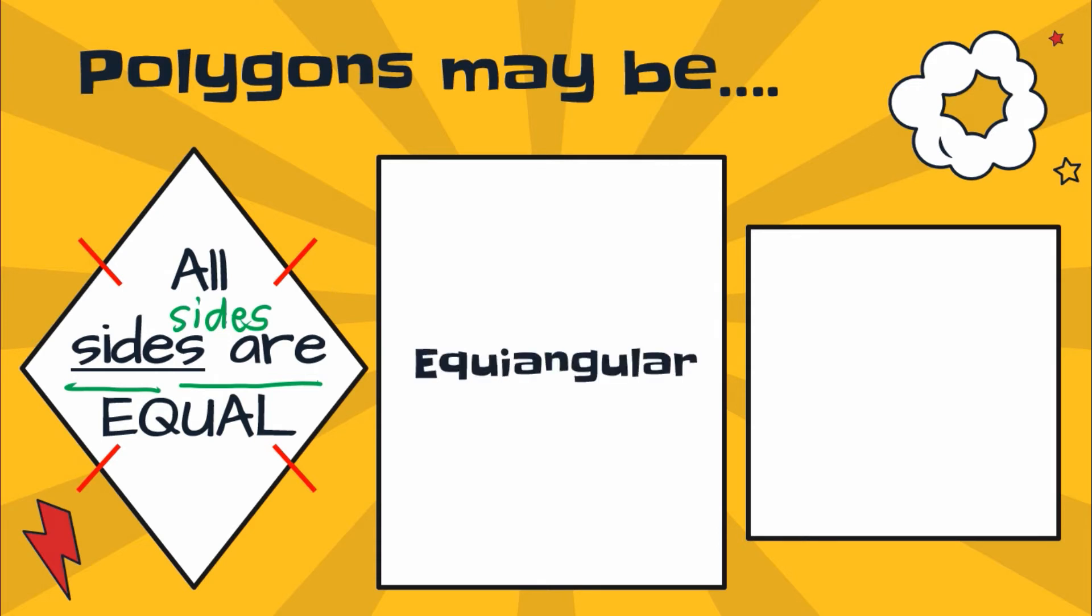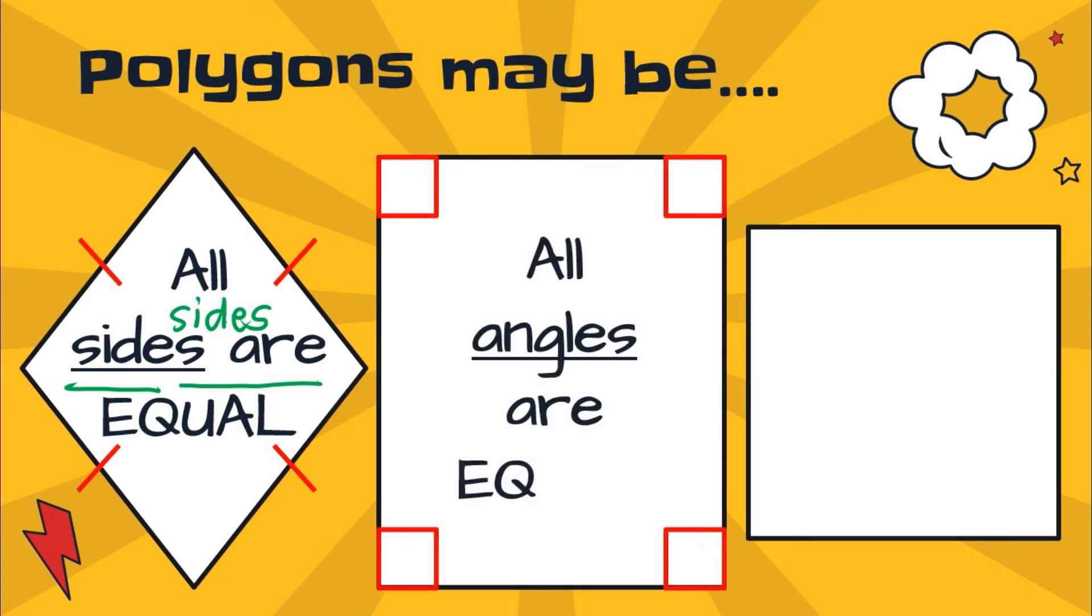Next, we have the equiangular. Equiangular, all angles are equal.